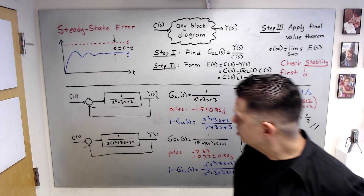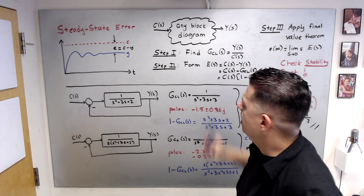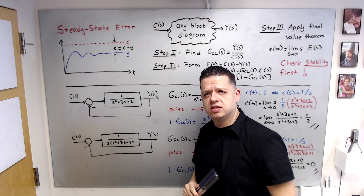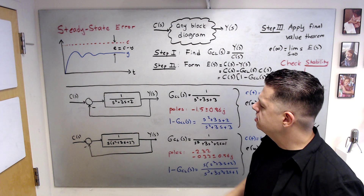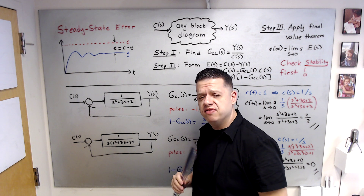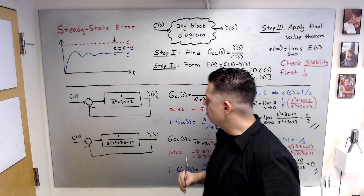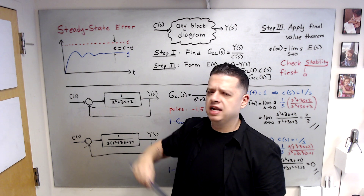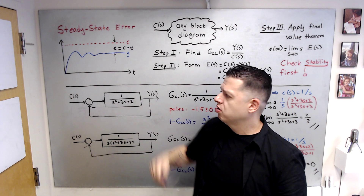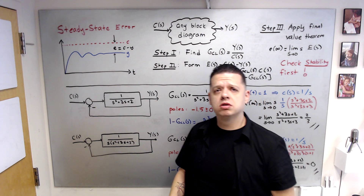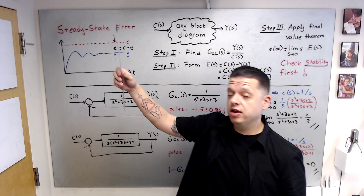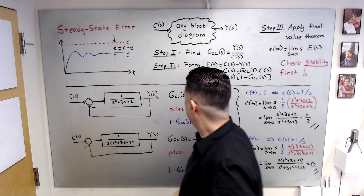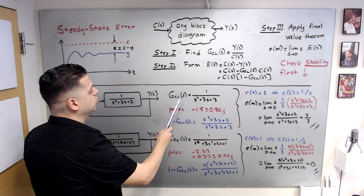Let's look at example one: a unity feedback case with a given transfer function. We're interested in finding the steady-state error of the system. For instance, if the command C is an altitude of three meters, you apply your control action to a quadcopter — will it actually go to three meters? That is the steady-state error, and we need to find it.